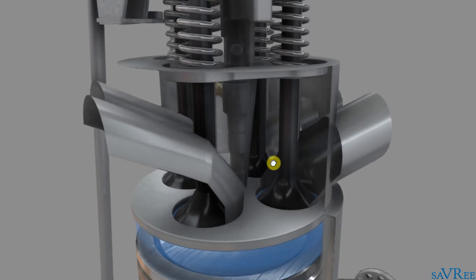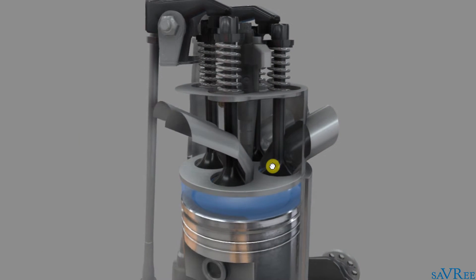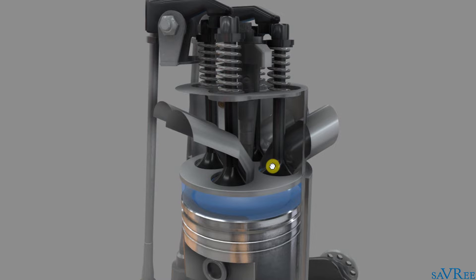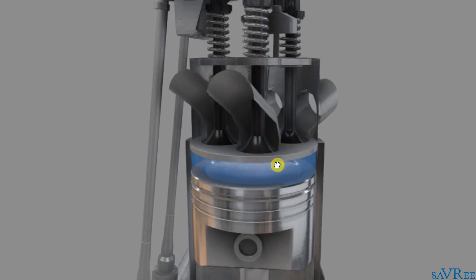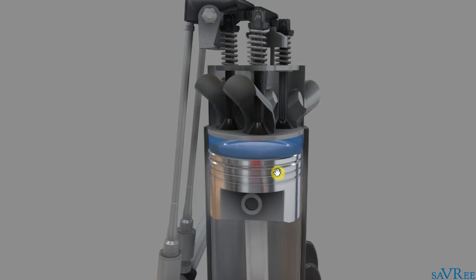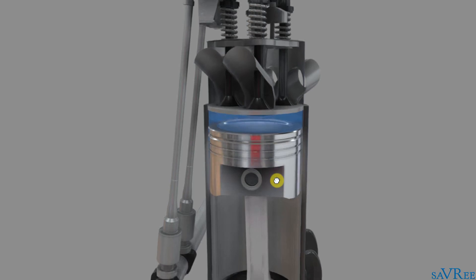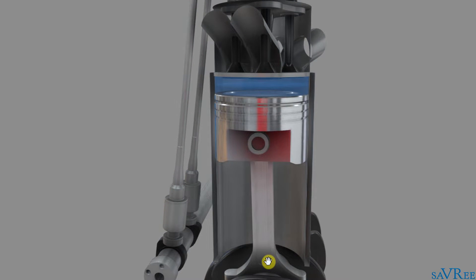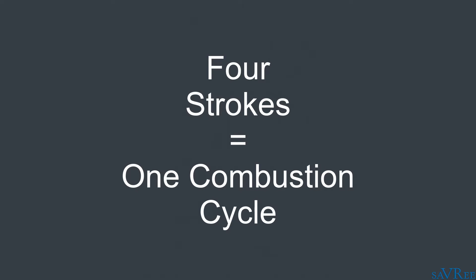Let's now have a look at exactly how this four-stroke diesel engine works. Now there are four strokes per combustion cycle. That means in order to fully end a combustion cycle, the piston is going to need to move down once, up once, down once, up once. That's four strokes. And each of those strokes has a purpose. Let's have a look at stroke one.